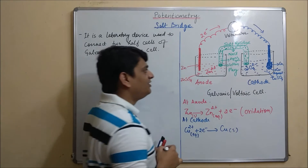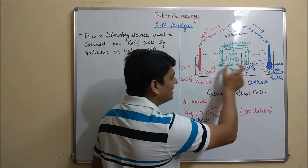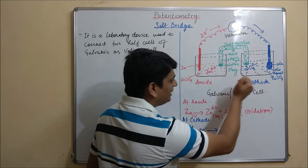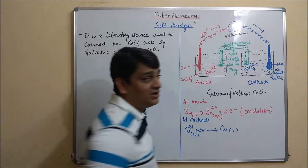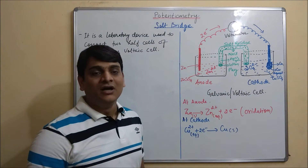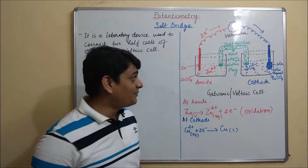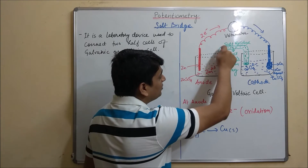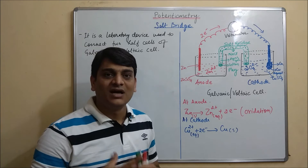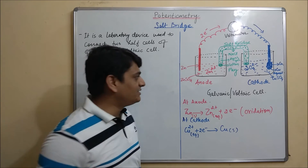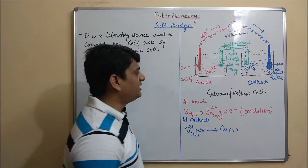Here you can see the salt bridge present between the two cells, connecting the anode and the cathode. In this salt bridge, NaCl salt is filled, though other salts may also be used. The salt bridge is also filled with agar gel, which acts as a gelling agent, and at both ends a cotton plug is present.